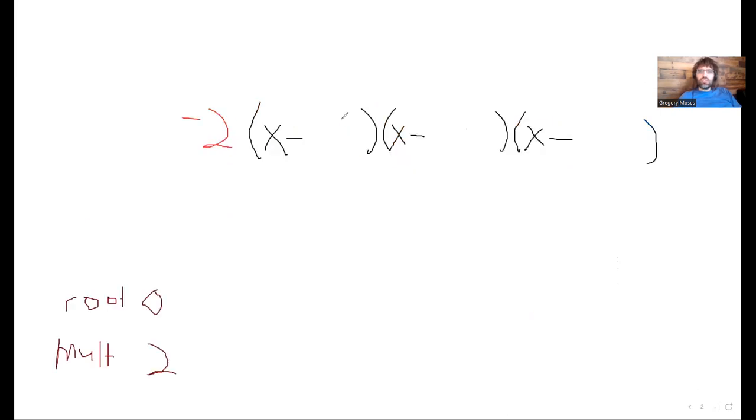So if we want 0 to be a root, we should have an x minus 0. And the multiplicity says if we have a multiplicity other than 1, that's telling us that we should have this x minus 0 more than once. So if the multiplicity is 2, we should have an x minus 0 twice.